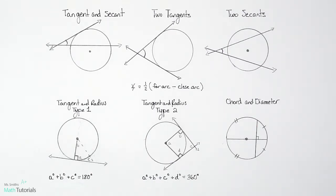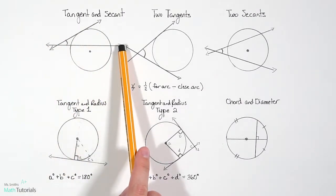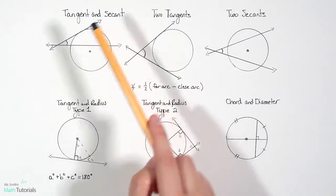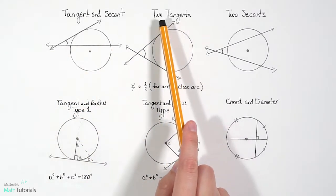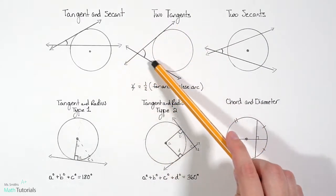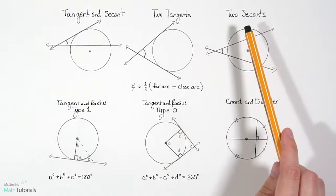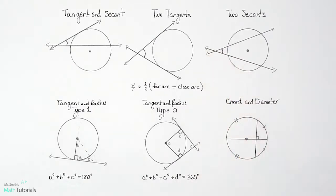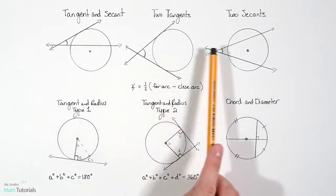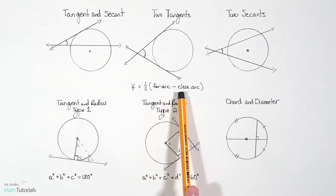Let's look at a few more angle-arc relationships. First, a tangent and secant: a secant is a line that cuts through the circle, and a tangent just touches it and keeps going — they cross outside the circle and form an angle. The same formula applies to two tangents and to two secants, which also cross outside the circle. For each of these situations, we can find the outside angle using one half times the far arc measure minus the close arc measure.